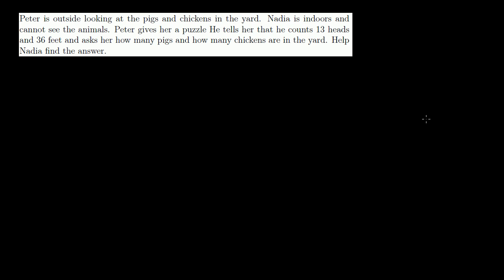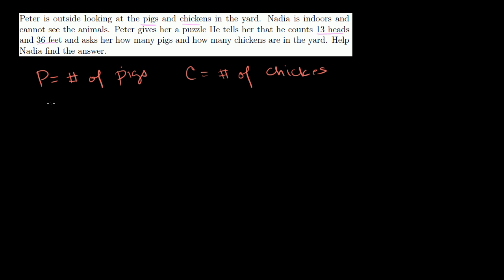Let's do one more — this one is especially fun. Peter counts 13 heads and 36 feet in the yard of pigs and chickens, and asks Nadia how many of each there are. Let P equal the number of pigs and C equal the number of chickens. Since each animal has one head: P + C = 13. Since each pig has 4 legs and each chicken has 2: 4P + 2C = 36.